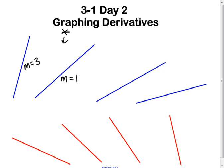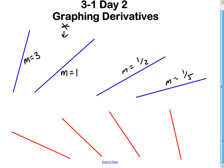The one to the right of 1 is going to be less than 1 but not 0, so maybe that one is a half. And this one is even less steep, closer to 0, so maybe that's one fifth. Again, these are just estimations and that's what I'm looking for you to do.